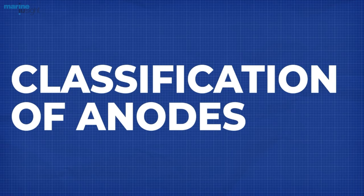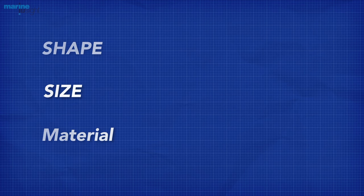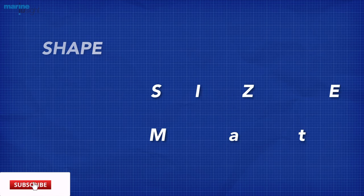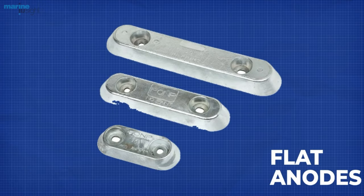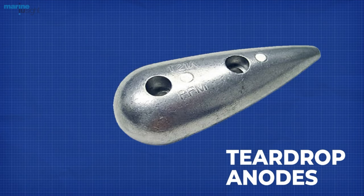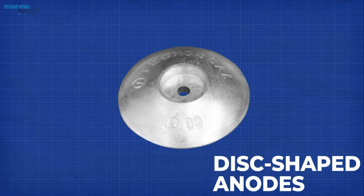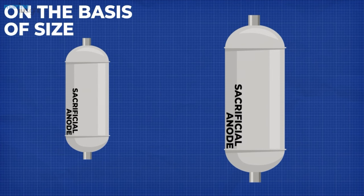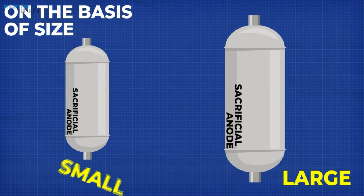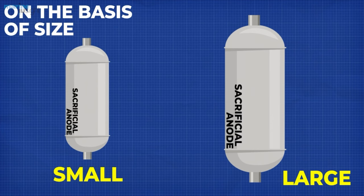Anodes are categorized under a variety of parameters. As per the classification of anodes on the basis of their shape, there are six types: flat or block shaped, teardrop anodes, cylindrical or semi-cylindrical anodes, disc shaped anodes, bracelet anodes and tubular anodes. Also, according to the size of anodes, they can be of two types: small sized and large sized anodes.